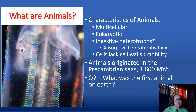The term ingestive heterotrophs distinguishes them from the members of kingdom Fungi, which are absorptive heterotrophs — they directly absorb their nutrients from their environments after externally digesting them. Animals, on the other hand, digest their food internally. Animal cells lack cell walls, a property that allows great flexibility of their body, especially during movement.